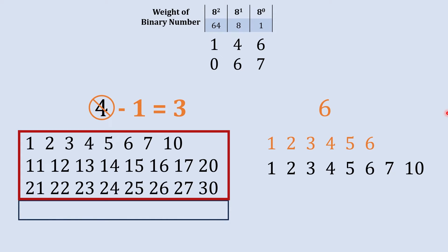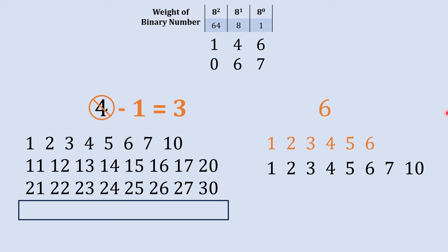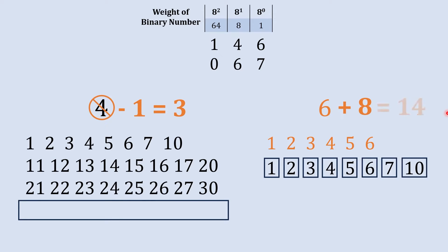So now we have 30 in the eight's place. In the ones column, previously we had six sets of ones and we have added eight sets of ones, so total it becomes 8 plus 6, which is 14. So now we have 14 in the ones column and we are going to subtract 7 from 14.